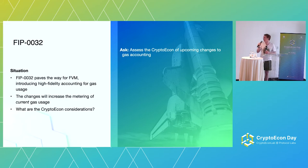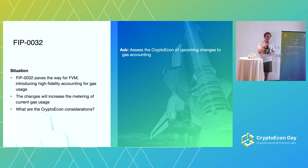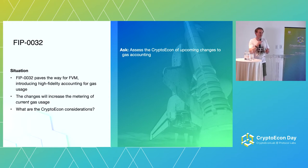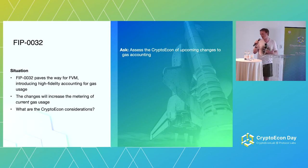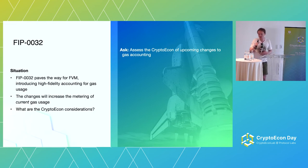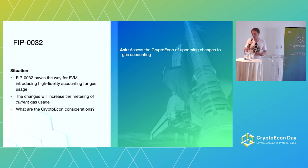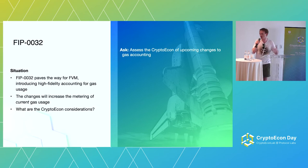The next thing is a specific example of work we did a couple of weeks ago. We were assessing FIP 0032, which is quite an interesting FIP because it introduces new accounting for Filecoin's gas. This is brought in to pave the way for FVM in a few months, but it's actually going to change gas usage in Filecoin right now. So it's quite important to understand this and what the consequences might be.